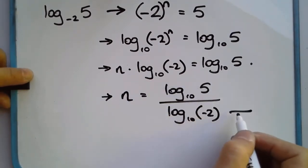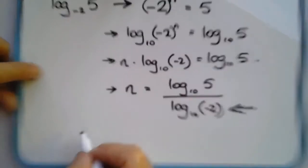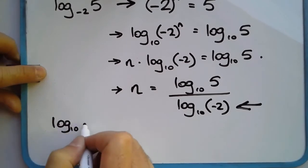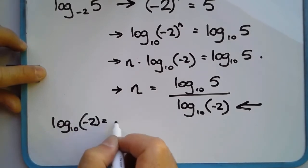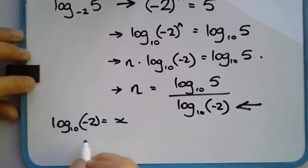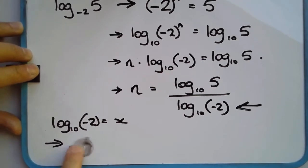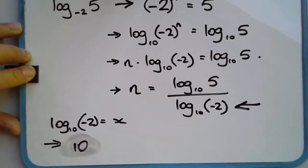Now, the problem is that line there. So log base 10 of negative 2, let's say that that equals x, is really the same as saying, if we rewrite in exponential form, 10 to the power of x is equal to negative 2.